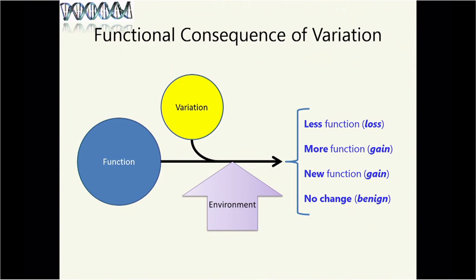This is getting back to the idea of protein function and the variation reduction and its interaction with environment. You can have the variation reduce in less function or loss of function. These are terms you'll hear in medical literature. More function, gain of function. New functions, also gain of function or neomorphism. Or no change, let's call it benign.